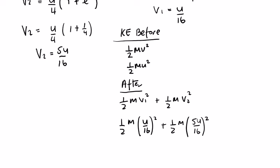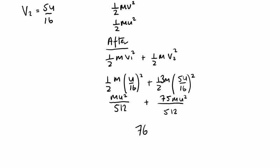KE_after = (1/2)*m*(u/16)² + (1/2)*3m*(5u/16)². The denominator 16² = 256, so for the first term we get mu²/512, and for the second term we get 3m*25u²/(2*256) = 75mu²/512. That gives a total of 76mu²/512 for KE_after. The initial KE was mu²/2.